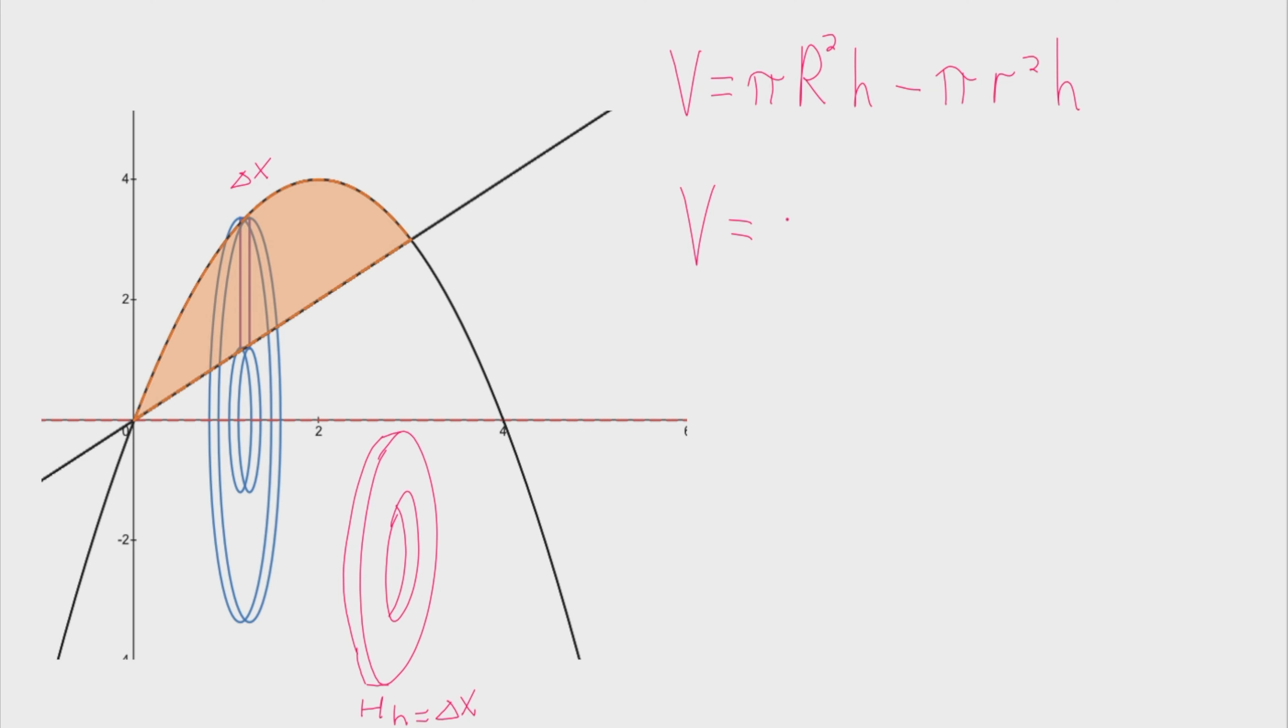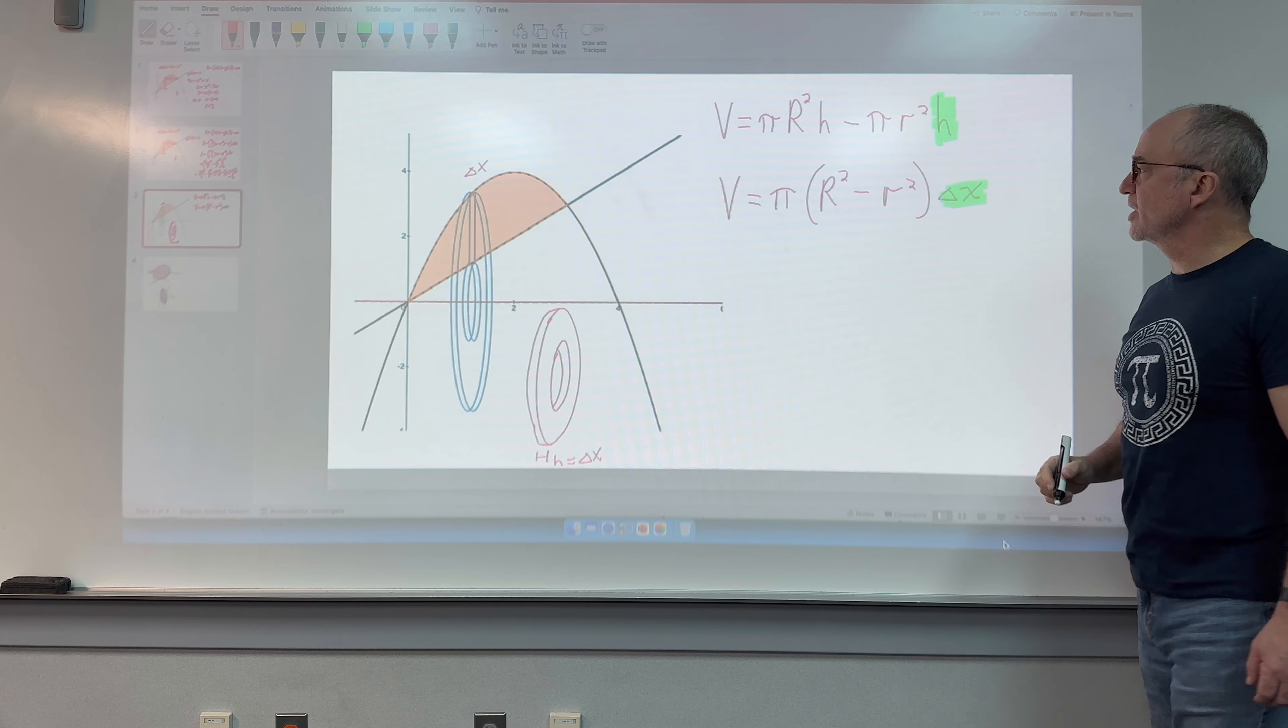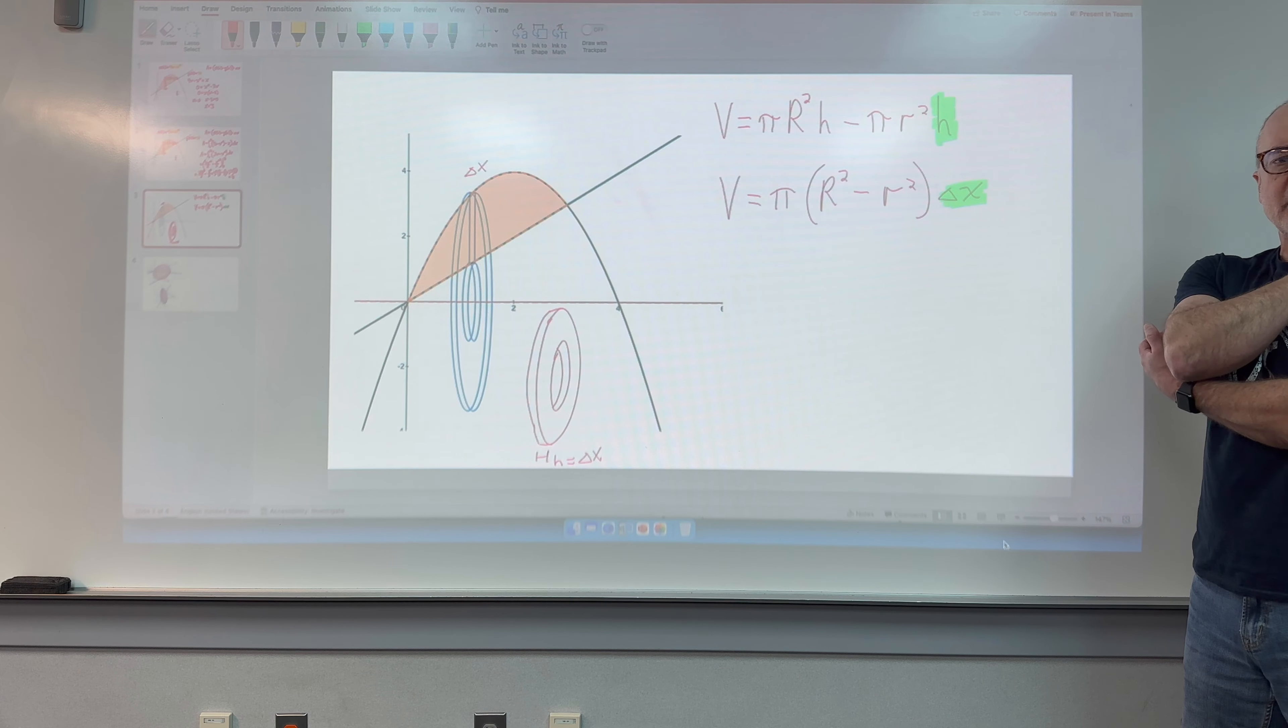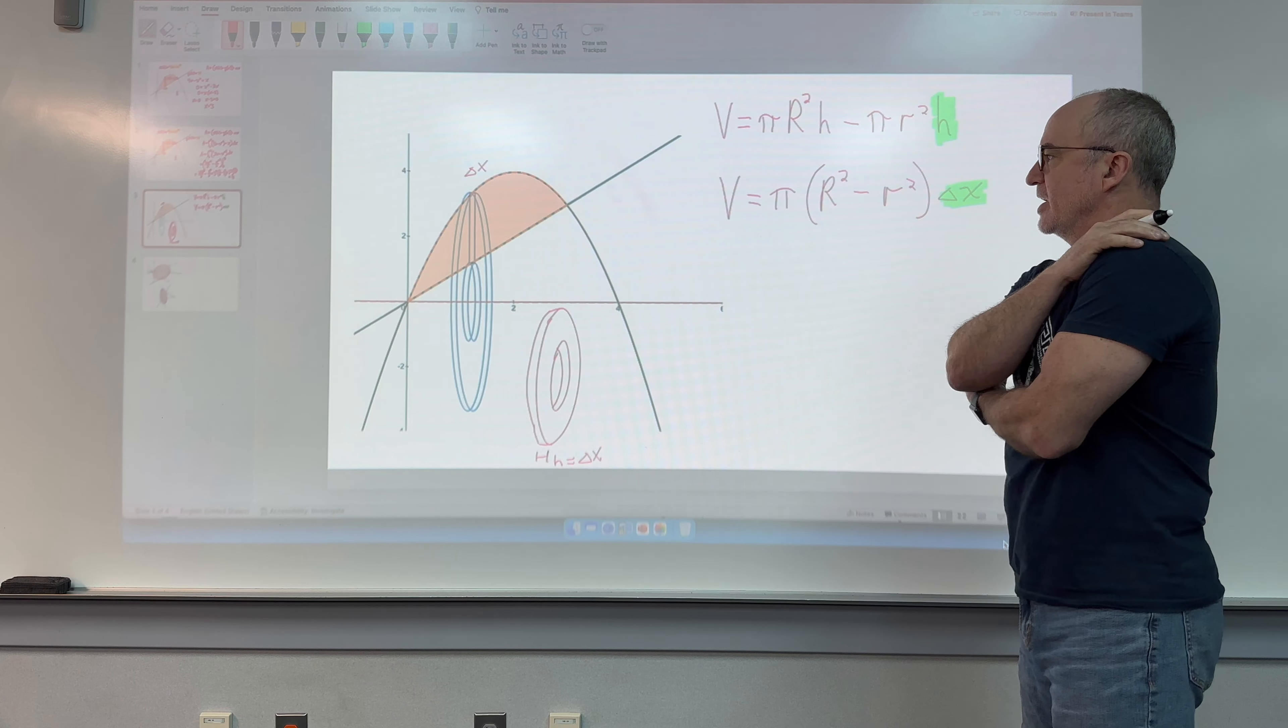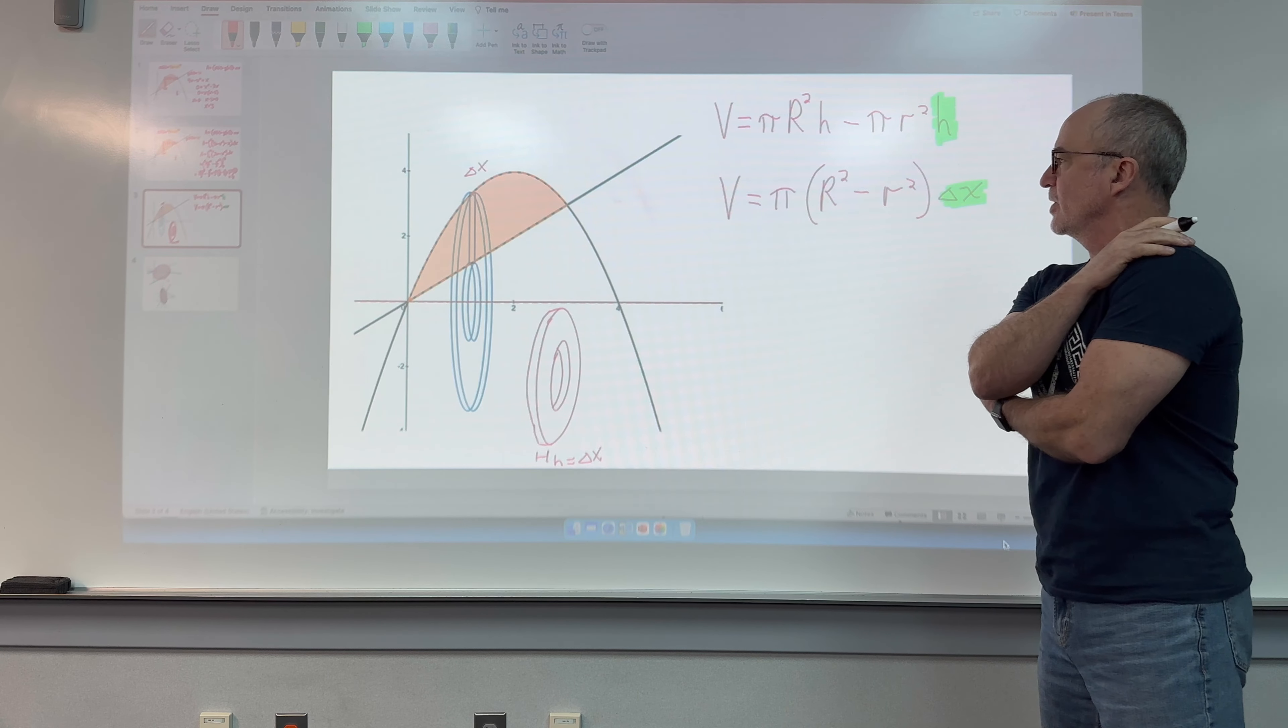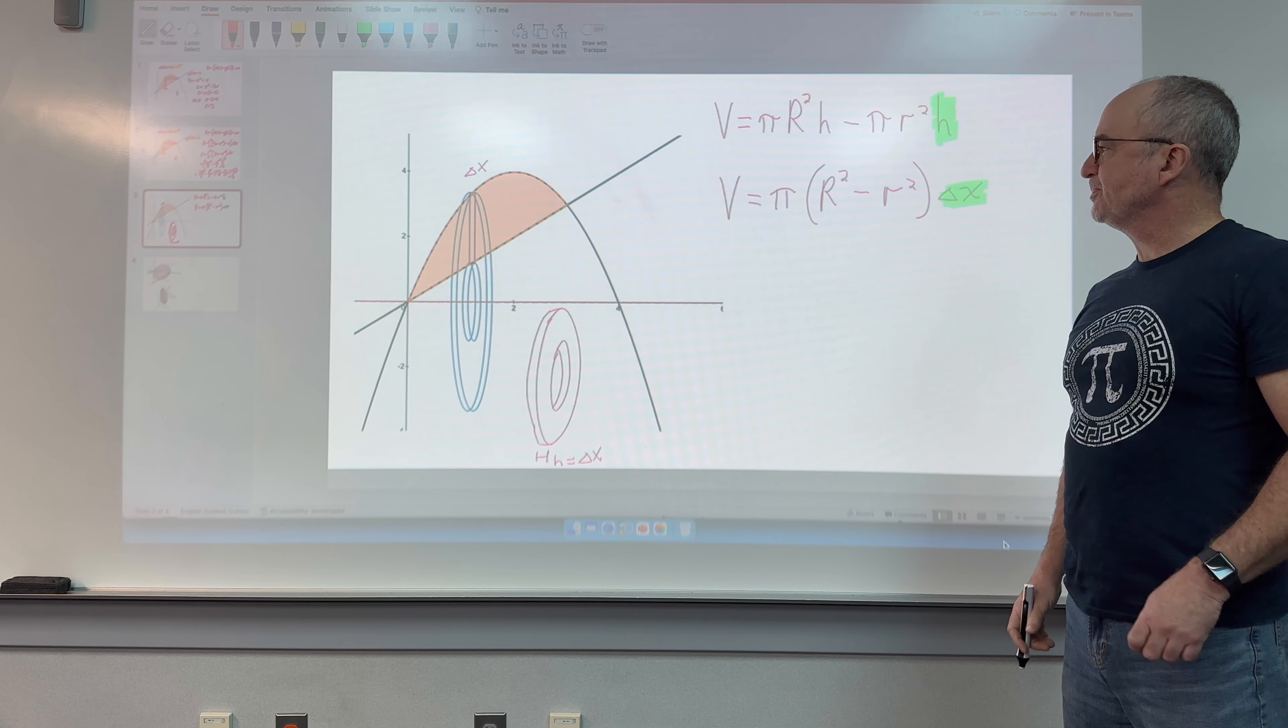The way this will work out in this volume formula, let's simplify it a little bit. We can factor a pi out of both terms. We can factor an h out of both terms, which I'll put here at the end, and I'm going to change that h to delta x to start making this look like the integral form, where it'll be a dx. All that's left in this first term is R squared. All that's left in this next term is lowercase r squared.